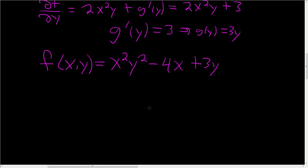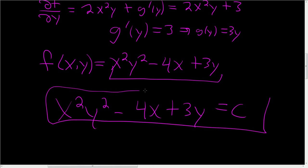No, it is not. The final answer, to get it, you just take this and set it equal to c. So the final answer is x²y² - 4x + 3y = c. And that's how you solve an exact equation.